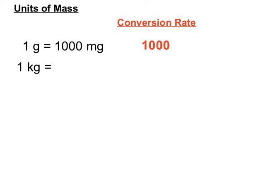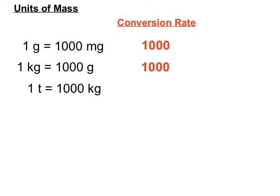We have one kilogram equaling a thousand grams, so the conversion rate is a thousand. We'll either be multiplying or dividing by a thousand to move from kilograms to grams or vice versa. And conveniently, one ton equals a thousand kilograms, so the conversion rate is a thousand again. We'll either be multiplying or dividing by a thousand depending on whether we're going from kilograms to tons or tons to kilograms.